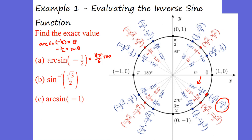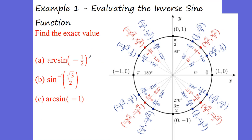Now you might say there's another value that also gives me negative 1 over 2, and that's 7π over 6. Which one is right — 11π over 6 or 7π over 6? They're both right. You might call this 330 degrees and also 210 degrees — both are correct. If you put sine of 210 degrees into your calculator you get negative 1 half; sine of 330 degrees also gives negative 1 half. Your calculator cannot distinguish the difference between these two, so it can be either 11π over 6 or 7π over 6.